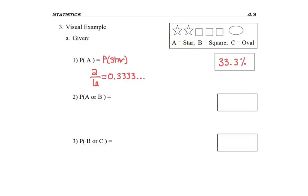Now let's go to problem 2. We're asked for the probability of A or B. The minute I see or, I know it's an addition rule problem, but I have to decide if these are mutually exclusive. I'm looking for the probability of a star or a square.